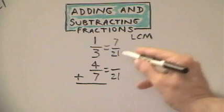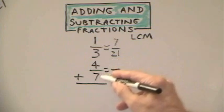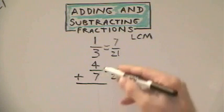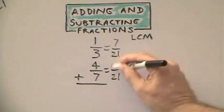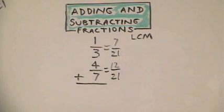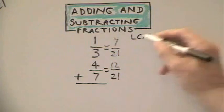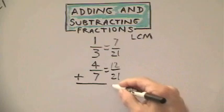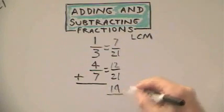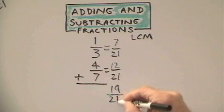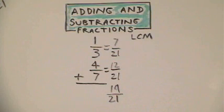Here, we take the 21 divided by 7 to give us 3. We take that 3, multiply it by the 4 to get 12. Now, all we do is we add the 7 and the 12, which gives us 19, and our final answer would be 19 twenty-firsts.